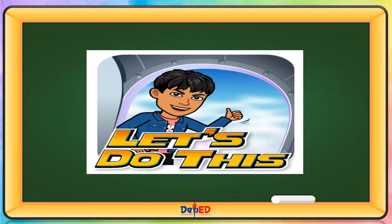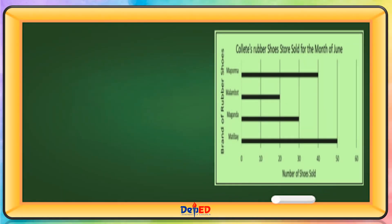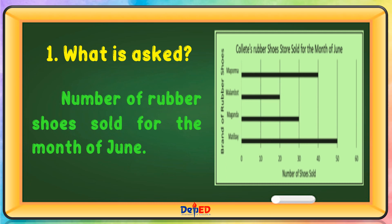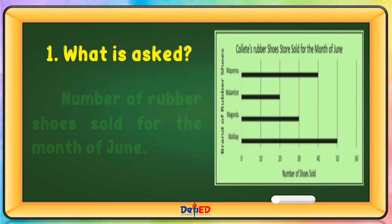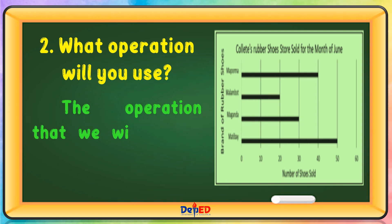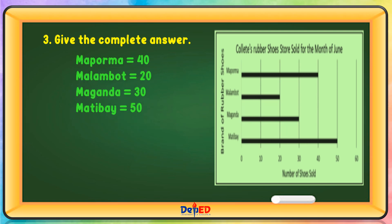Let's do this. Solve the given problem using the graph on the right. What is the answer? The number of rubber shoes sold for the month of June. What operation will you use? The operation that we will use is addition. Maporma shoe is 40, Malambot is 20, Maganda is 30, Matibay sold 50. 40 plus 20 plus 30 plus 50 equals 140.